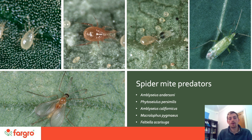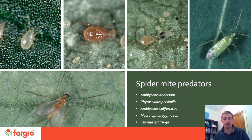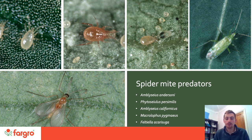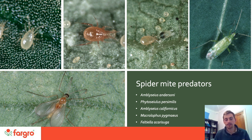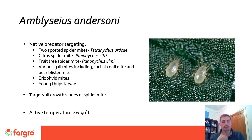Now I'm going to look at the individual biologicals available for spider mite control. These predators are all really effective in creating a good IPM strategy. I'm going to describe how best to apply them and the conditions and timings of application. I'll look at Amblyseius andersoni, Phytoseiulus, Amblyseius californicus, Macrolophus, and finally Feltiella, and hopefully unpack some of the information and give you an idea of how you can utilize these species to create an effective IPM strategy.